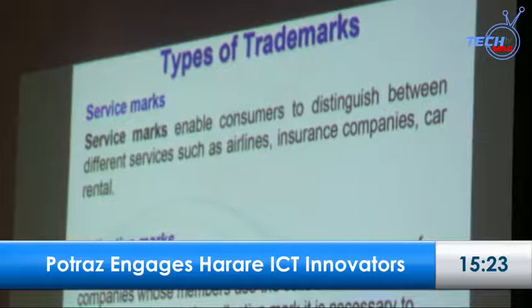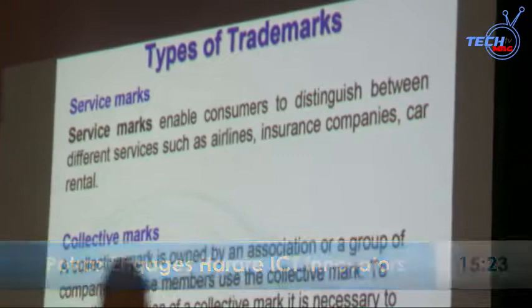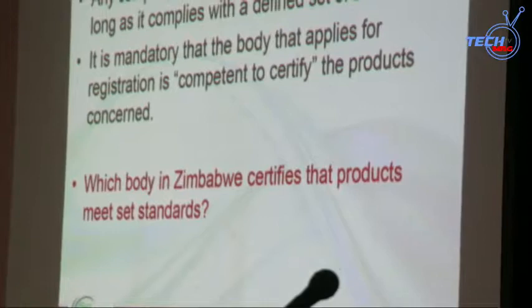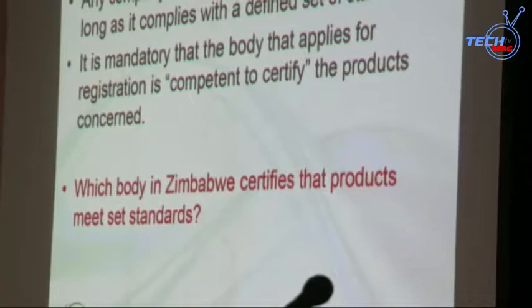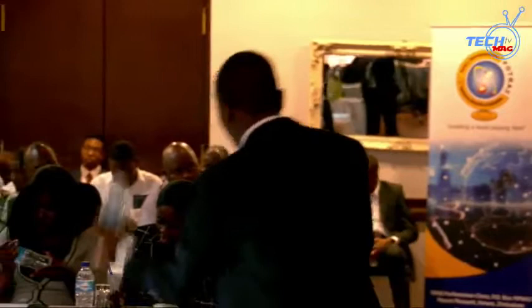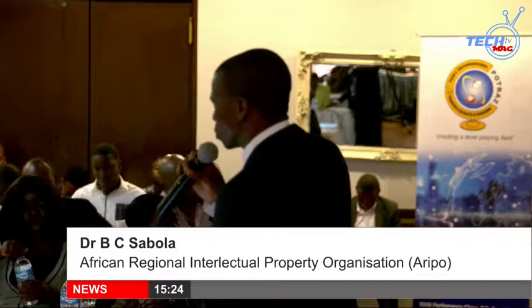Types of trademarks: service marks enable consumers to distinguish between the services of one company from another. Collective marks are for associations. Certification marks — for example the Standards Association of Zimbabwe certifies products. Importance of trademark protection includes exclusivity in terms of use.